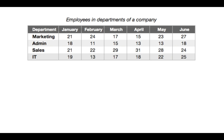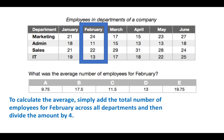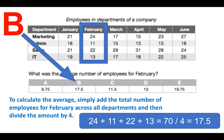Next type of question. Here we have a chart of employees in departments of a company. Across the left we've got departments: marketing, admin, sales and IT. Across the top are months over a six-month period: January through June. The question is: what was the average number of employees for February? Add the employees across all departments for February: 24 + 11 + 22 + 13 = 70, divided by 4. The answer is B, 17.5. When you break down the section you need to focus on, it's quite simple.